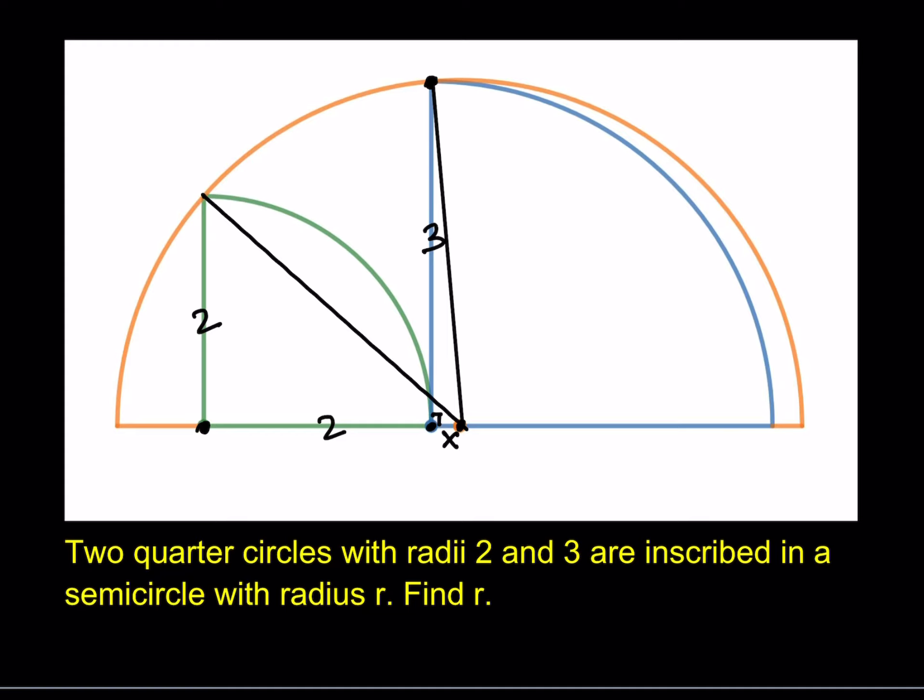But from this point to that point, now we know that it's going to be x plus 2. Nice. What else do we know? Well, we know that the radii of the quarter circles are 2 and 3. But what about the hypotenuses? So, if you look at this length here, like this and this one.